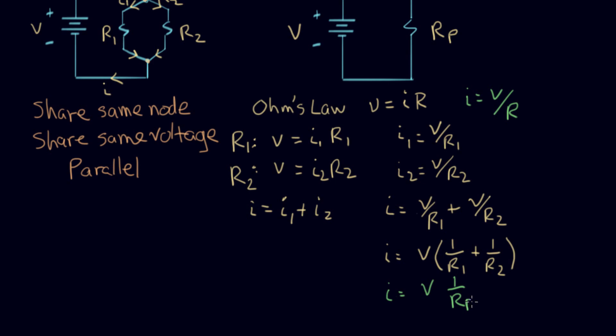So I'm gonna bring this equation down here and write it as I equals V times one over R. I'm gonna call this RP because what I want is for this expression and this expression to be equal. Same I, same V. These guys are equal. One over RP equals one over R1 plus one over R2.